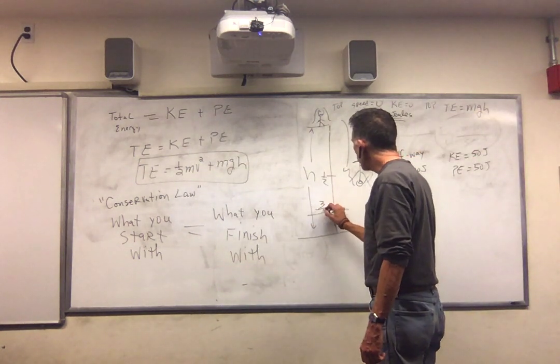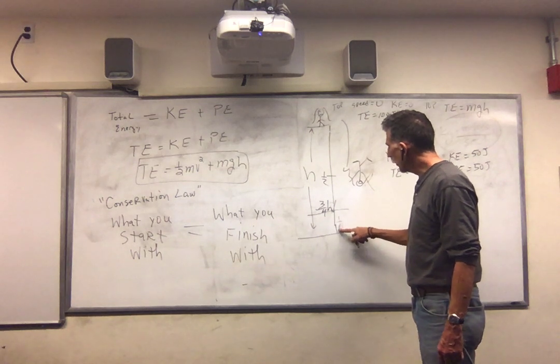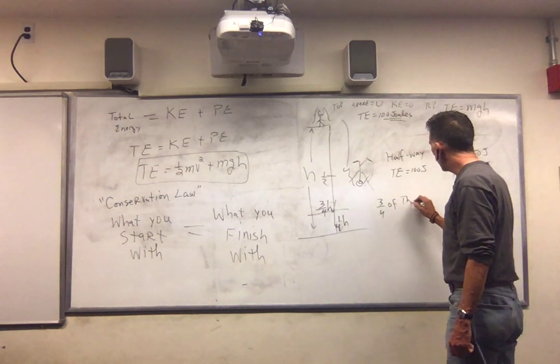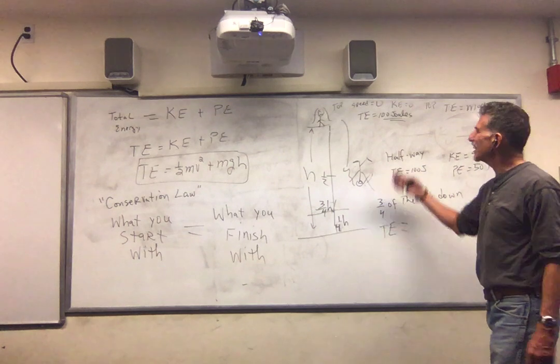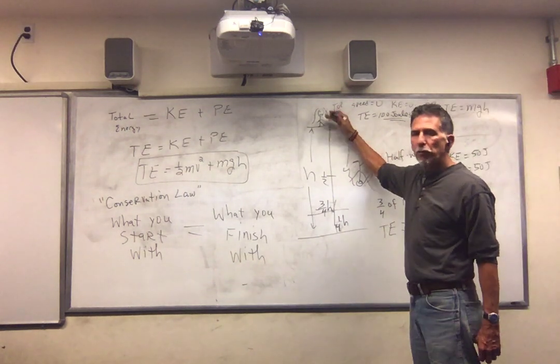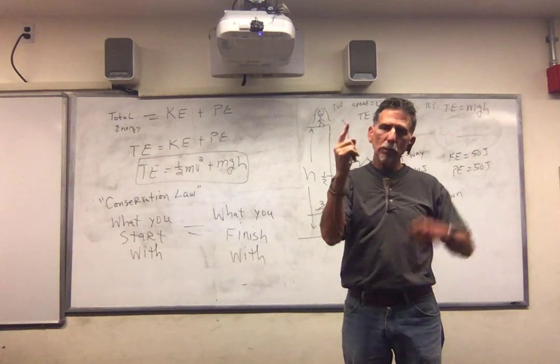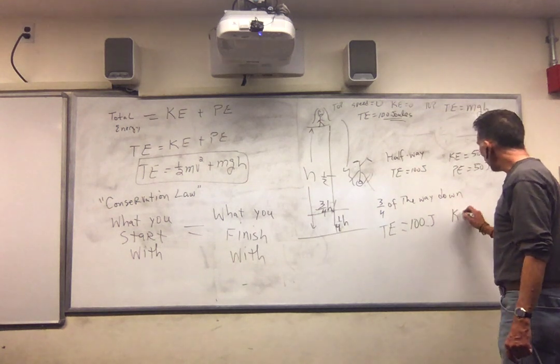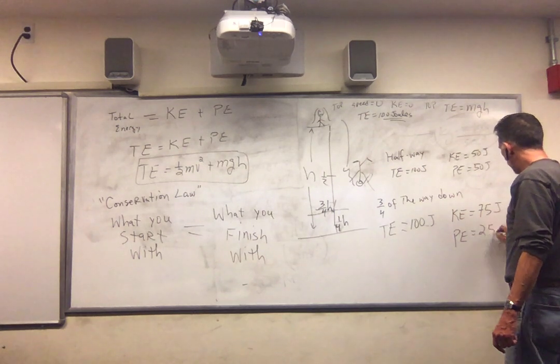When she's three-fourths of the way down, her height is only one-fourth, one-quarter of H. So, at this point, three-fourths of the way down, what's her total energy? Her total energy is still 100 joules. The total energy does not change. But, can you see that as she falls, her kinetic energy is increasing while her potential energy goes down. But, they still have to add up to 100 joules. When she's three-quarters of the way down, her kinetic energy now is going to be 75 joules. And, so, her potential energy is 25 joules. See that?